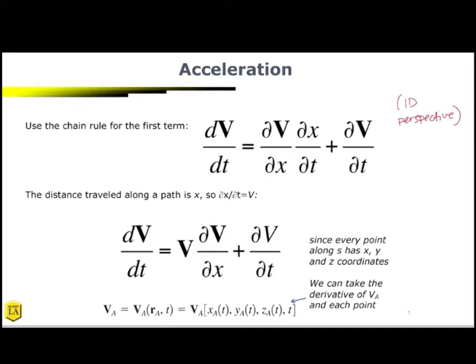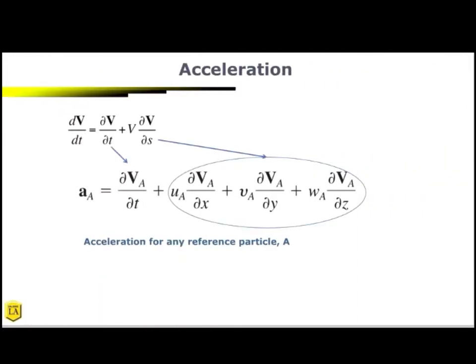Since every point along S, along the streamline, has X, Y, and Z coordinates, we can also expand this. So this is just our X direction, but we can also expand this to every point of our particle in space as well as time. So this is what the acceleration field looks like for a reference particle A. So the first term here, we can see we're taking our derivative with respect to time, and here we're taking our derivative with respect to space.